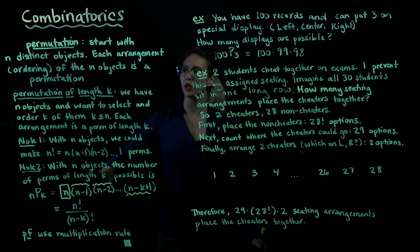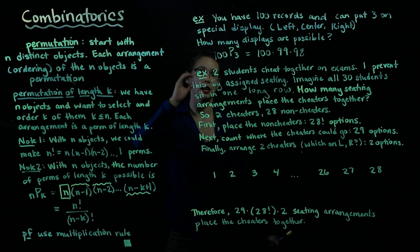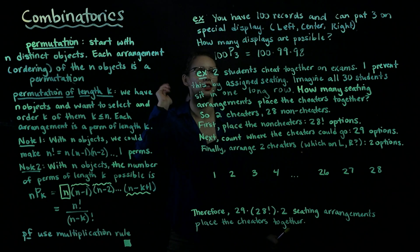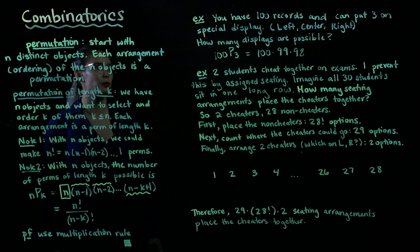So now that we know the definition of permutation and know a couple properties about it, let's calculate some probabilities, or actually calculate some permutations.